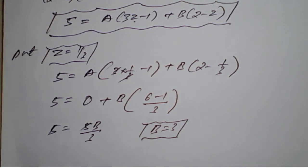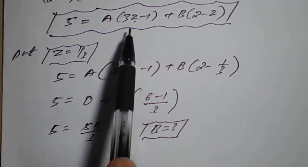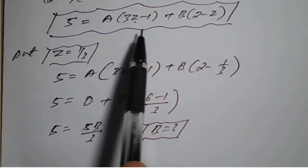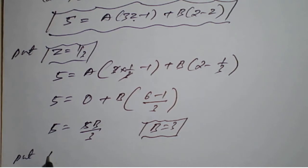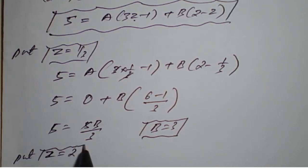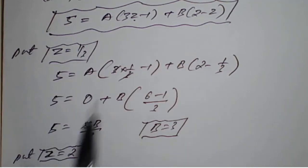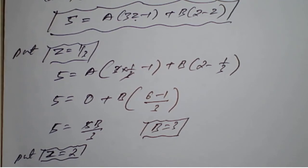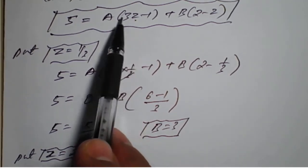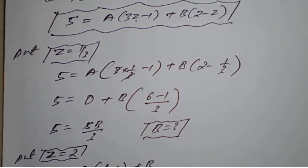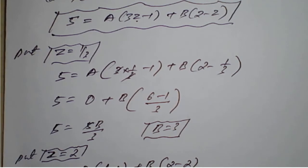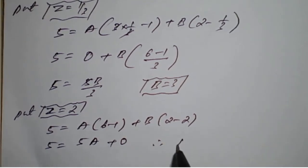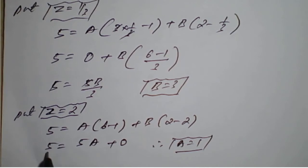Similarly, to find A, we put z = 2 to make B vanish. Substituting z = 2: 5 = A(3×2 minus 1) plus B(2 minus 2). This gives 5 = A(6 minus 1) plus 0, so 5 = 5A, and therefore A = 1.